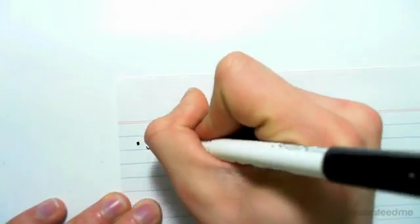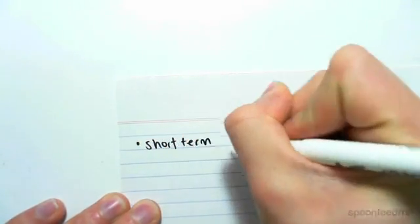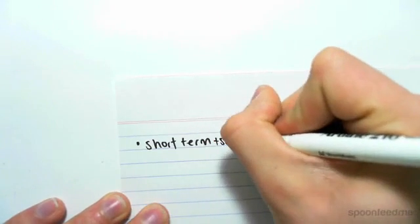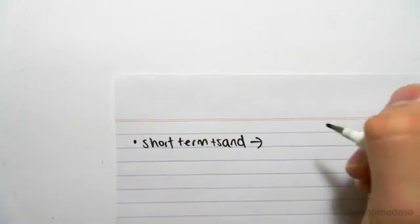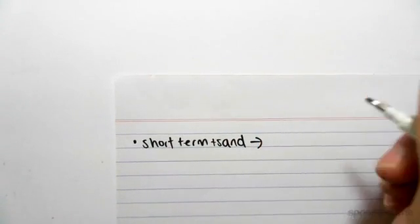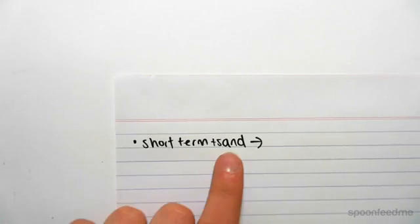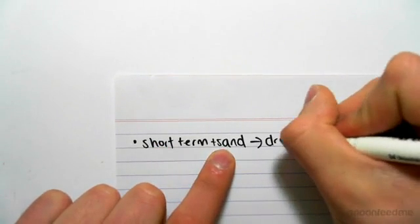The question said immediately after construction and we have a sand. So short term sand - the sand is going to drain straight away. So a clay is undrained, but a sand even in the short term is drained. So we have drained conditions.